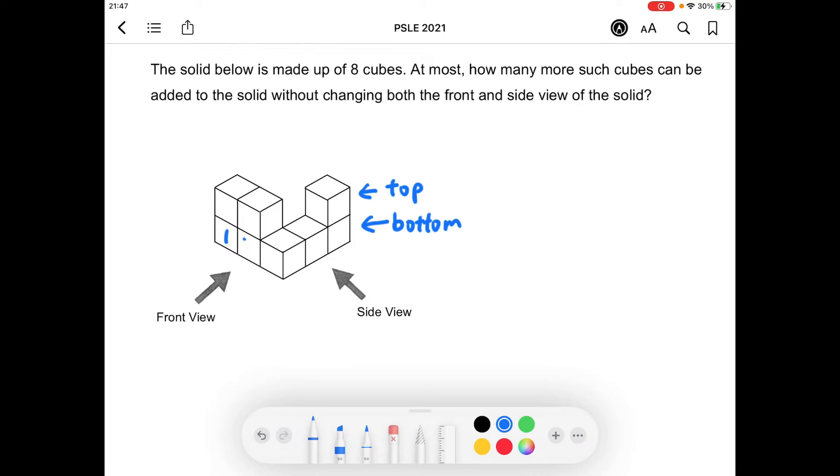So there are five cubes at the bottom layer and three cubes at the top layer.